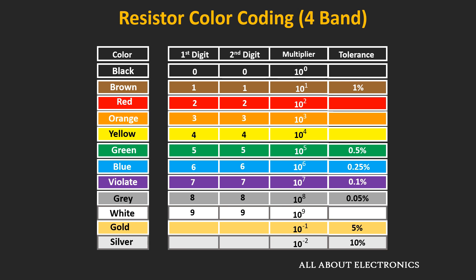Here is a table which defines the relationship between the different colors and the values they represent. The first two columns of this table define the first two color bands of the resistor, and depending upon the color of these bands, the digit values will change. Similarly, the next two columns define the multiplying factor as well as the tolerance value, which also change depending on the color.